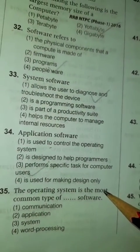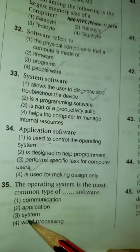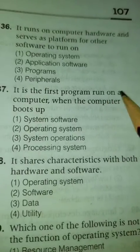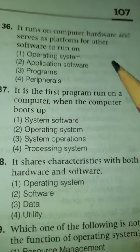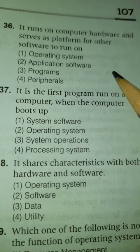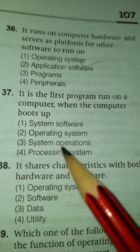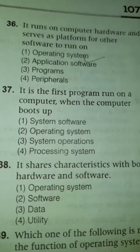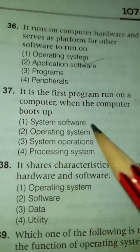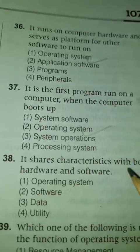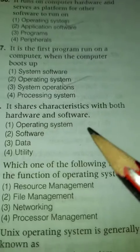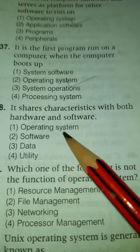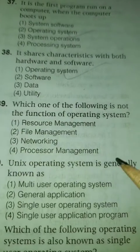The operating system is the most common type of system software. It runs on computer hardware and serves as a platform for other software to run on. It is the first program run on a computer when the computer boots up. The operating system shares characteristics with both hardware and software.